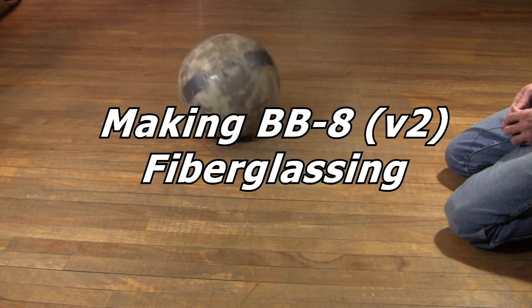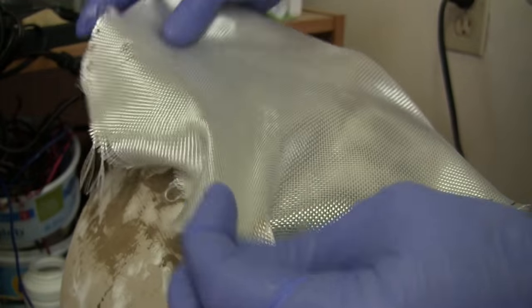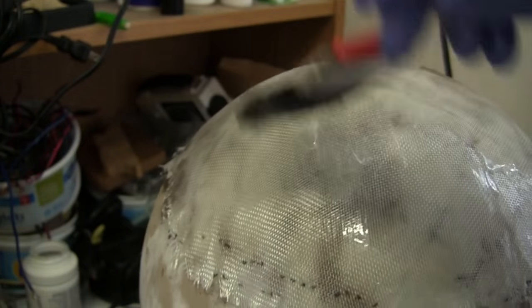Hi gang! This is part 2 of the making of my BB-8 version 2 droid, where I'll show how I put fiberglass on the ball, or globe, to make it more rigid.